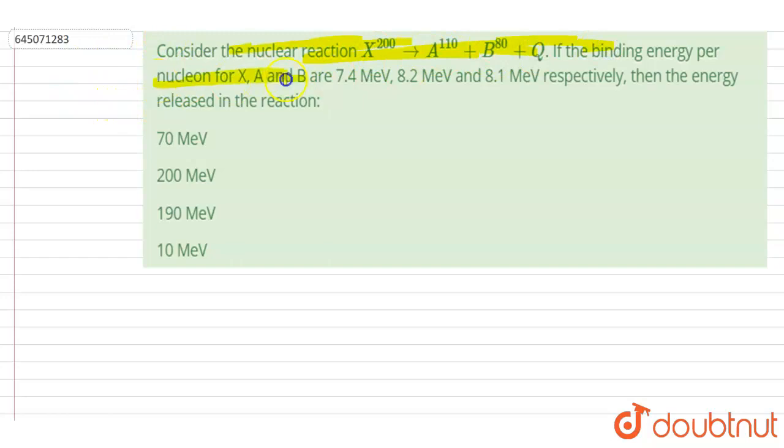If the binding energy per nucleon for X, A, and B are given here, you have to find out the energy released in this reaction. So if I talk about the energy released Q, it will be equal to final binding energy minus initial binding energy.